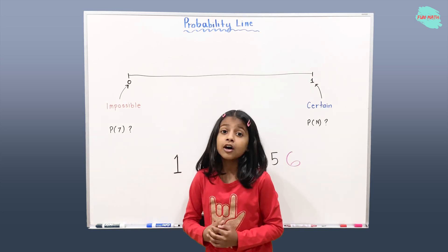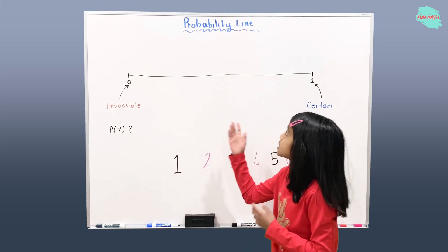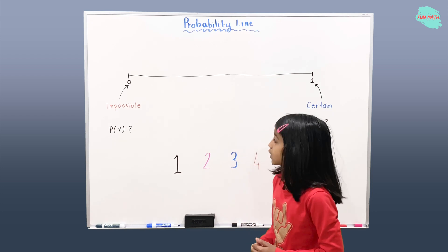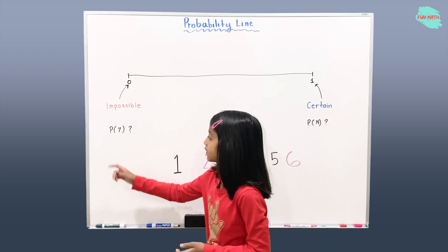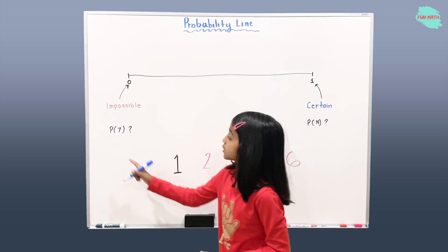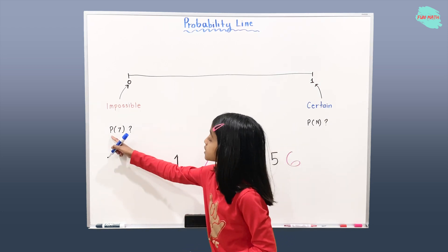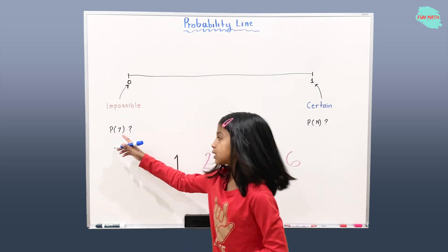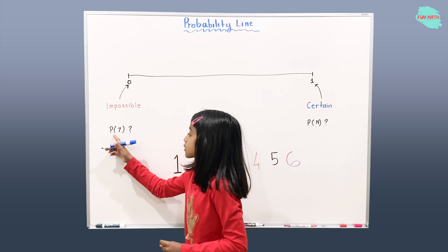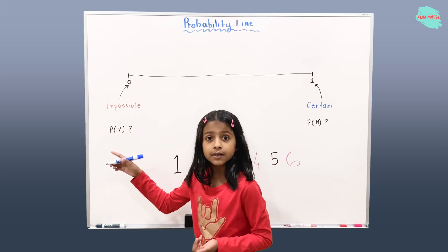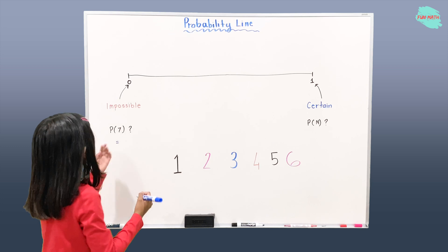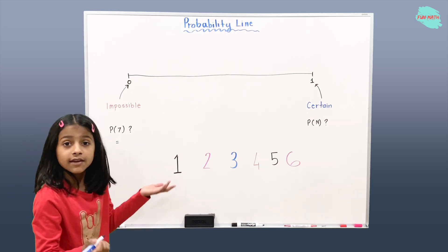Let's take some examples to understand the probability line. So the first example we have is: what is the probability of getting seven?